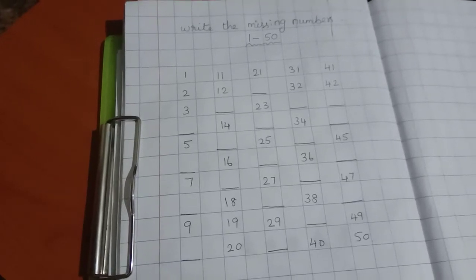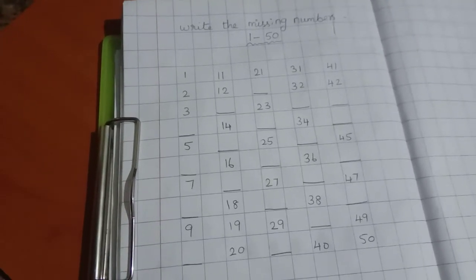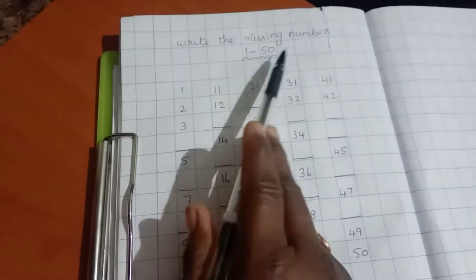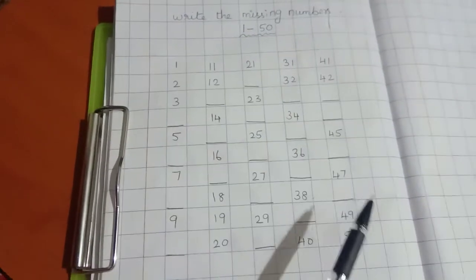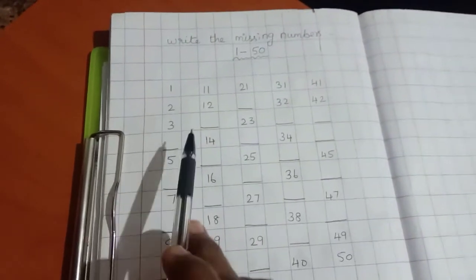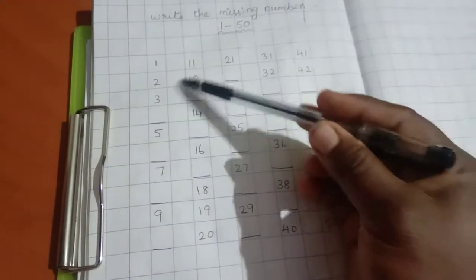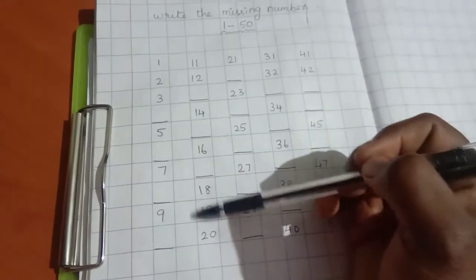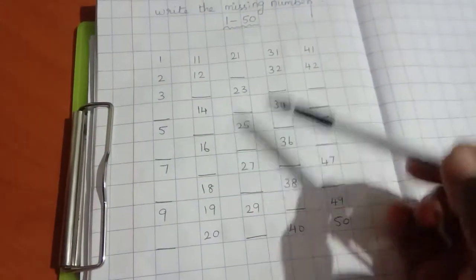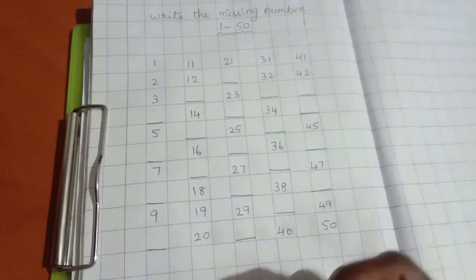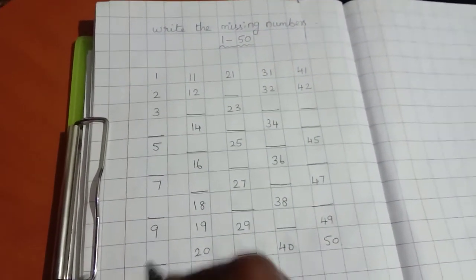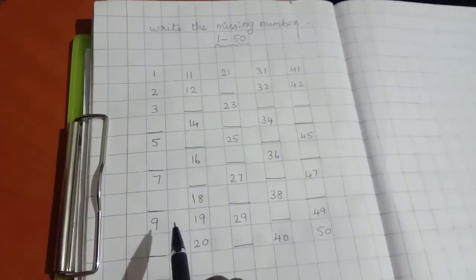Welcome back to Kids Learning Express. Today we are going to see math. In math, write the missing numbers. You all know 1 to 50, how to write 1 to 50, no? So we will write the missing numbers. In 1 to 10, some of the numbers are missed. 11 to 20 also, 21 to 30, and 31 to 40, 41 to 50. Some of the numbers are missing here, so we have to find out that number and we should write it here.